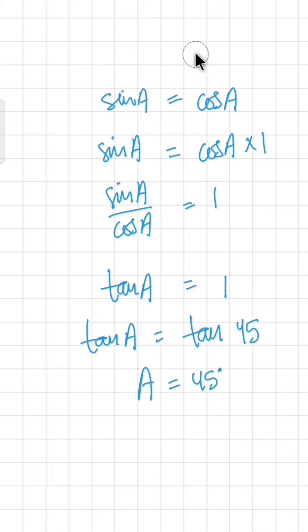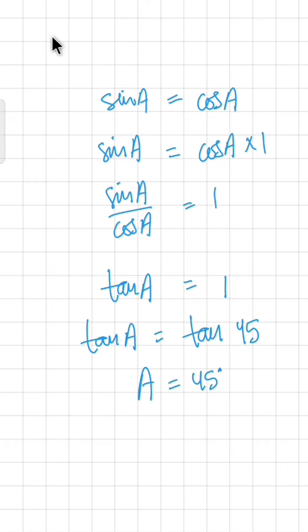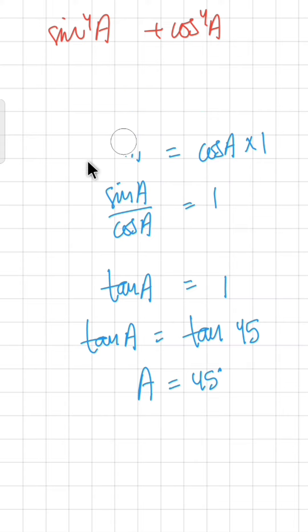Now we solve the problem: sin⁴(a) plus cos⁴(a), and we know that a is 45 degrees.